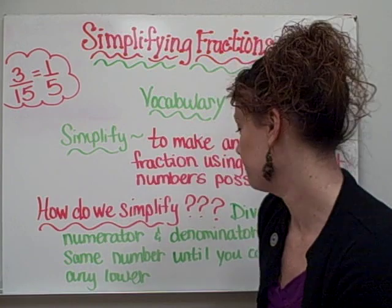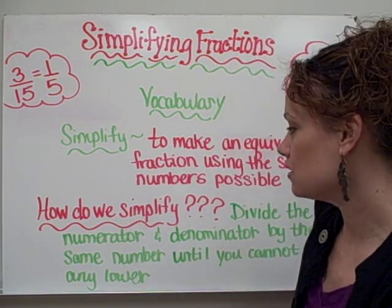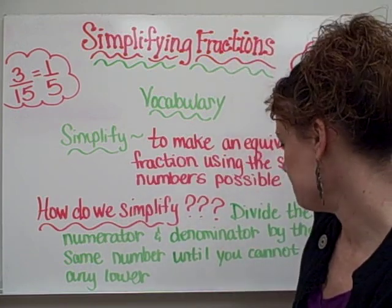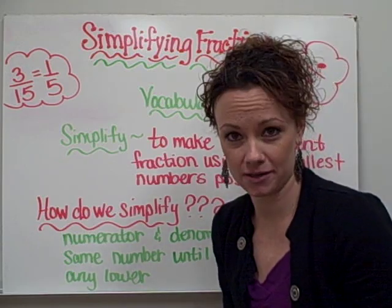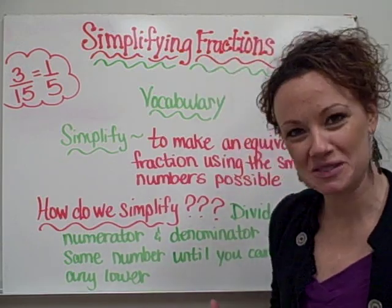Now, how do we do this? How do we simplify? Well, you're going to be dividing the numerator and the denominator by the same number until you cannot go any lower. So let me give you some examples of how we do that.